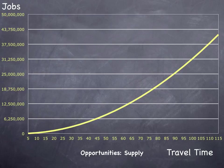At some point you reach the edge of the city, where the curve stops rising and starts flattening, because then you don't have very many opportunities at the edge of the city. But for a while it's steadily increasing with distance — you can think of it as increasing like the area of a circle, because you're steadily increasing the number of potential opportunities.